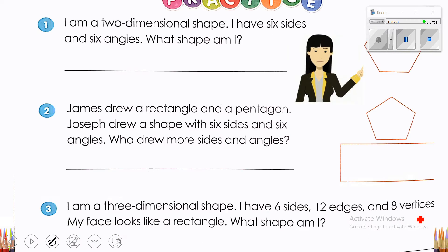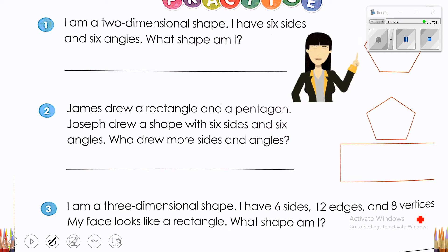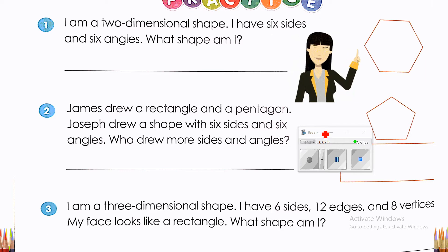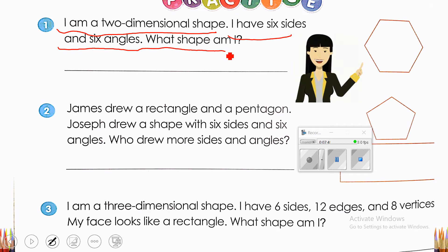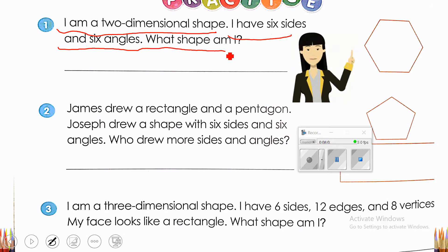Now open your book to page 500. Let's read the problem solving together. Do you remember the 4 steps for problem solving? Read, understand, make your plan, carry out the plan, and check your answer. First problem: I am a 2D shape. I have 6 sides and 6 angles. What shape am I? If you remember, 5 sides is for pentagon. Now 6 sides — it's a hexagon.